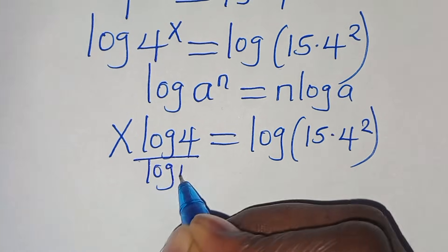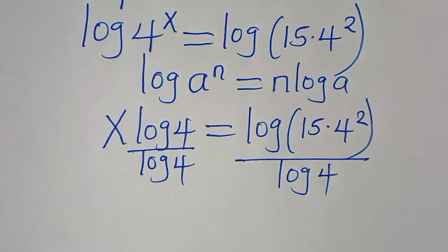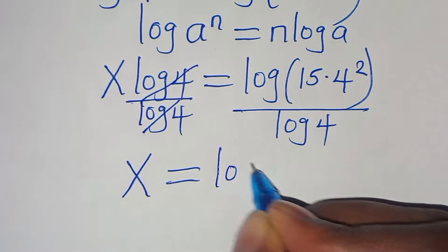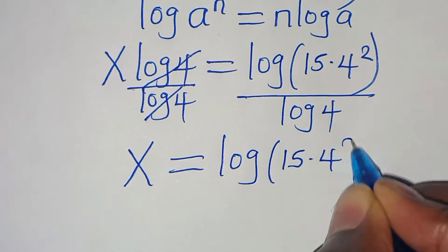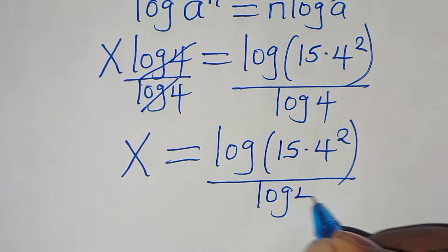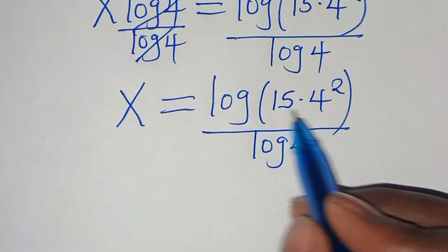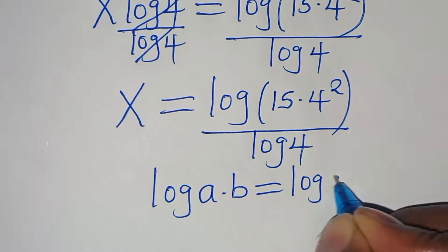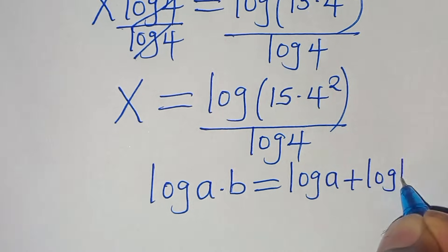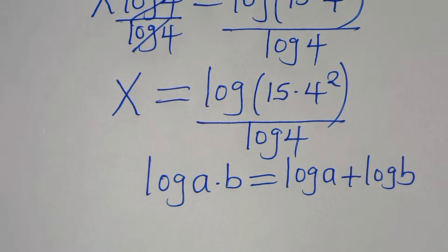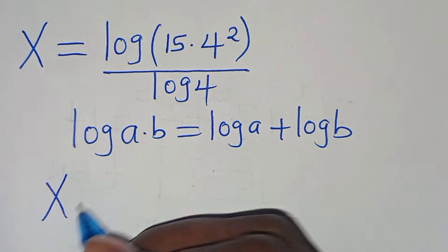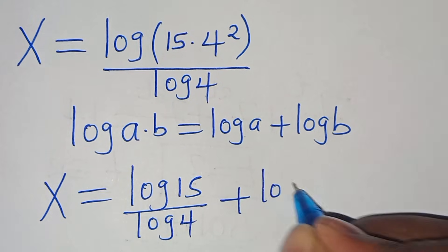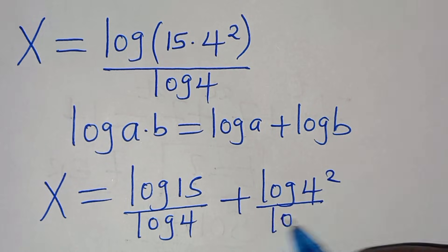So let's divide both sides by log 4. Log 4 and log 4 simplify, so we have x equals log of 15 multiplied by 4 to the power of 2, divided by log 4. Now, log of 15 times 4 to the power of 2 is in the form of log of a multiplied by b, which we can express as log a plus log b.